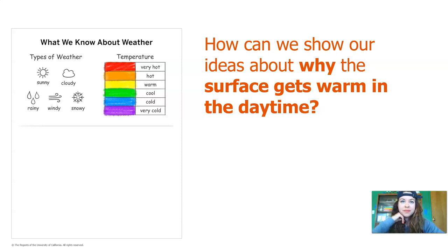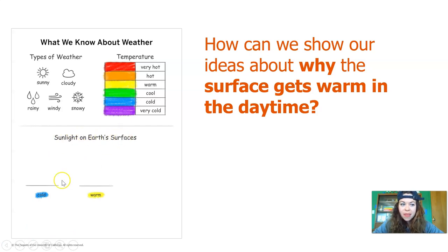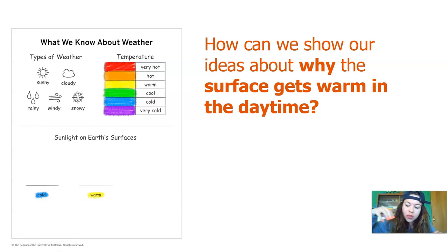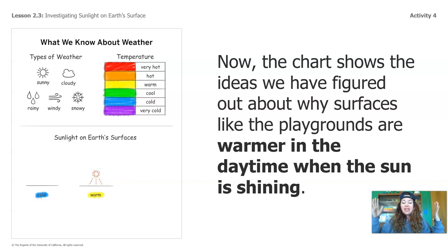How can we draw that on our chart to show what we just learned about surfaces warming up in the daytime because of sunlight? I made a title that says 'Sunlight on Earth's Surfaces,' and I drew a surface labeled as cold and a surface labeled as warm. I'm drawing my sunshine on the warm surface to show that light shining down makes a surface warm up. The chart now shows the ideas we've figured out about why surfaces like playgrounds are warmer in the daytime when the sun is shining.